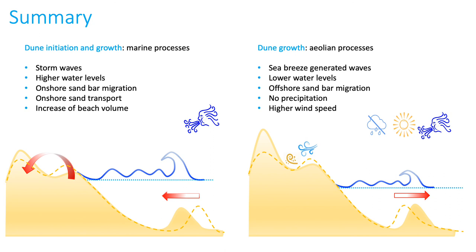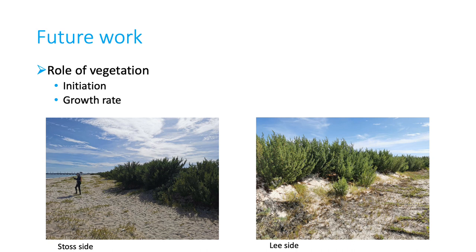As a concluding summary, dune initiation is associated with marine processes occurring during storm wave season and higher water levels, leading to onshore sandbar migration, welding, and berm overwash. Dune growth is mostly associated with aeolian processes occurring during spring and summer months, when waves are less energetic and water levels are lower, leading to maximum critical fetch distance and offshore sandbar migration, higher daily maximum wind speeds, and absent rainfall. Future work includes analysis of the role of vegetation, which is essential in dune evolution.